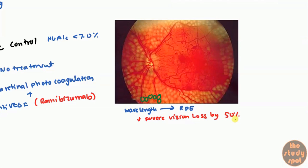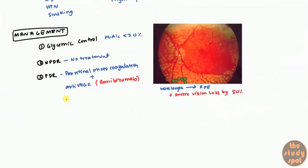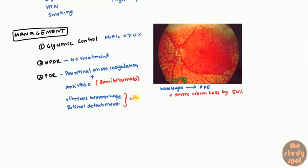If patients end up getting vitreous hemorrhage or retinal detachment, you can perform what's known as a vitrectomy. In a vitrectomy, you remove the whole vitreous humor. When you remove the vitreous humor, that tends to help out a lot, and you still give anti-VEGF even after the vitrectomy.